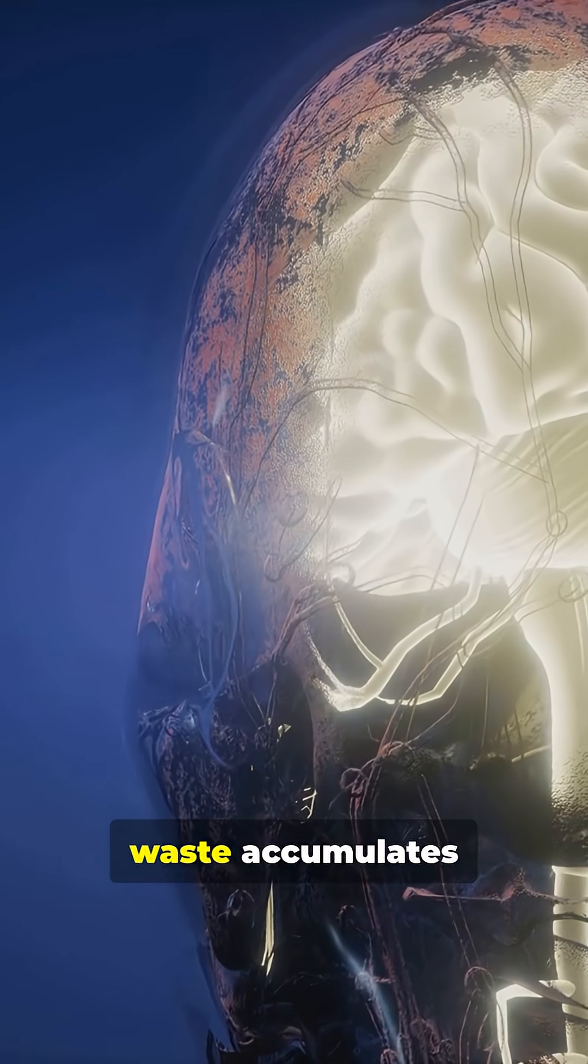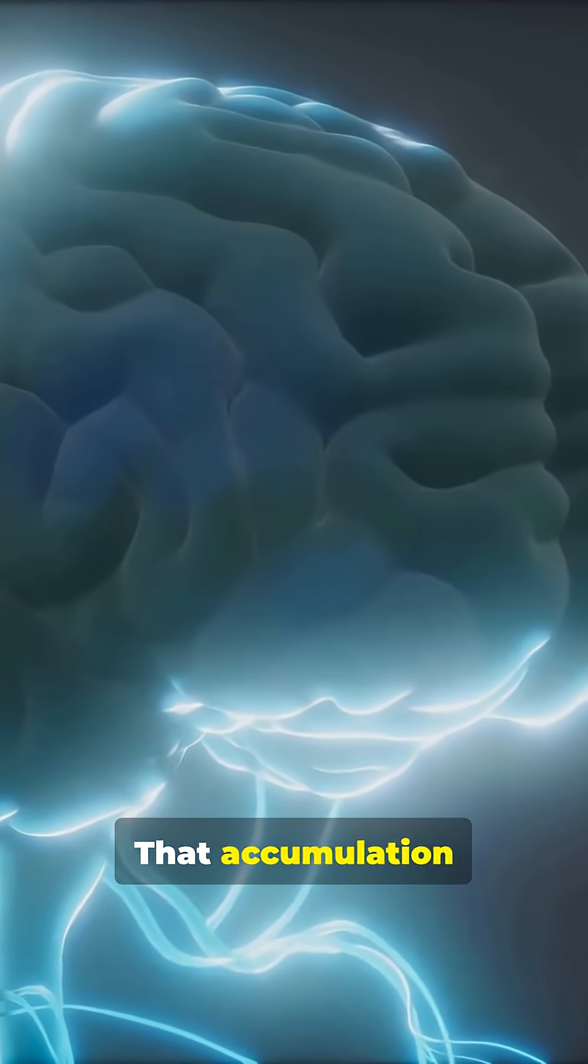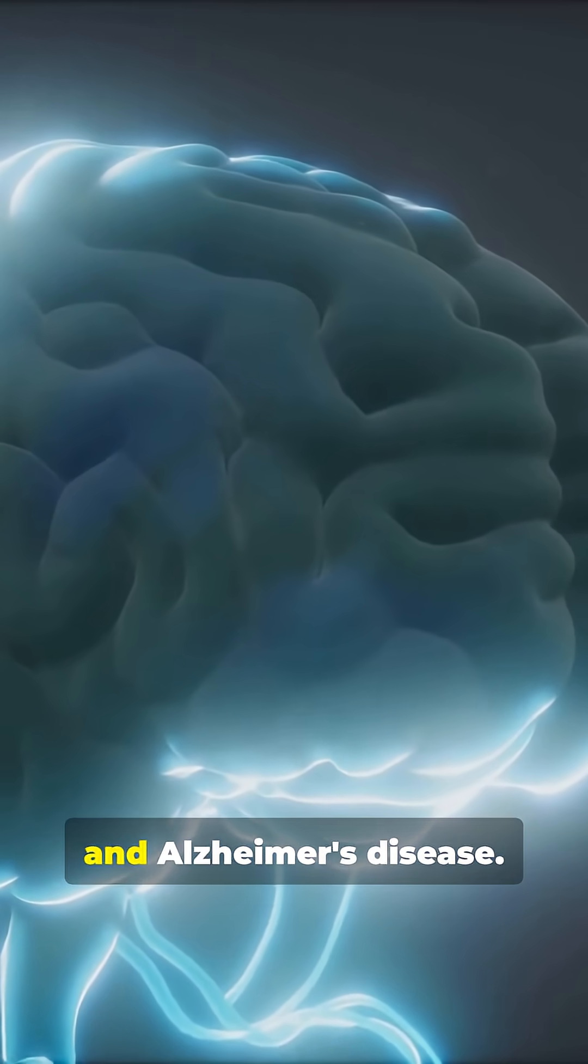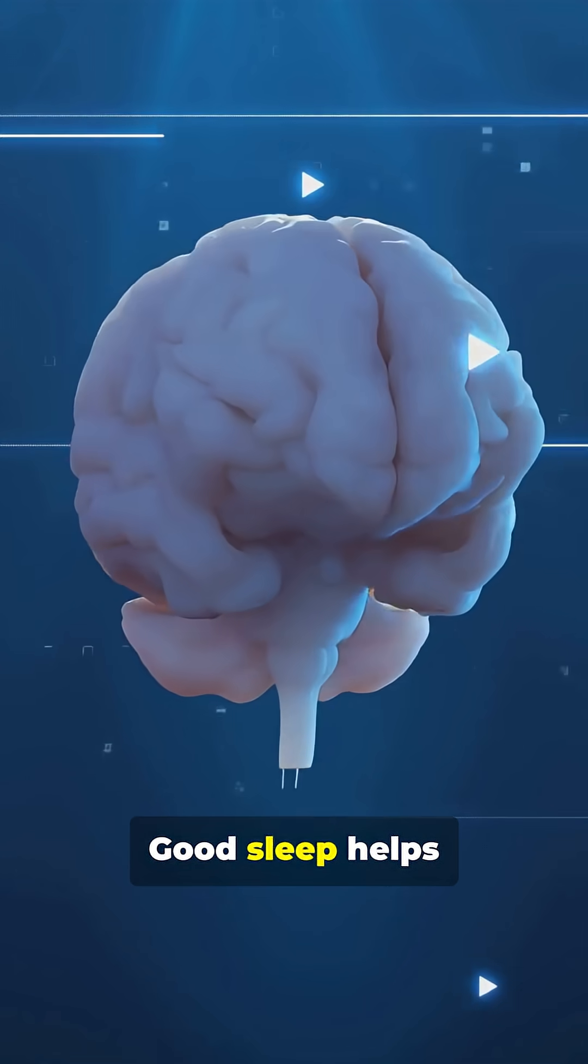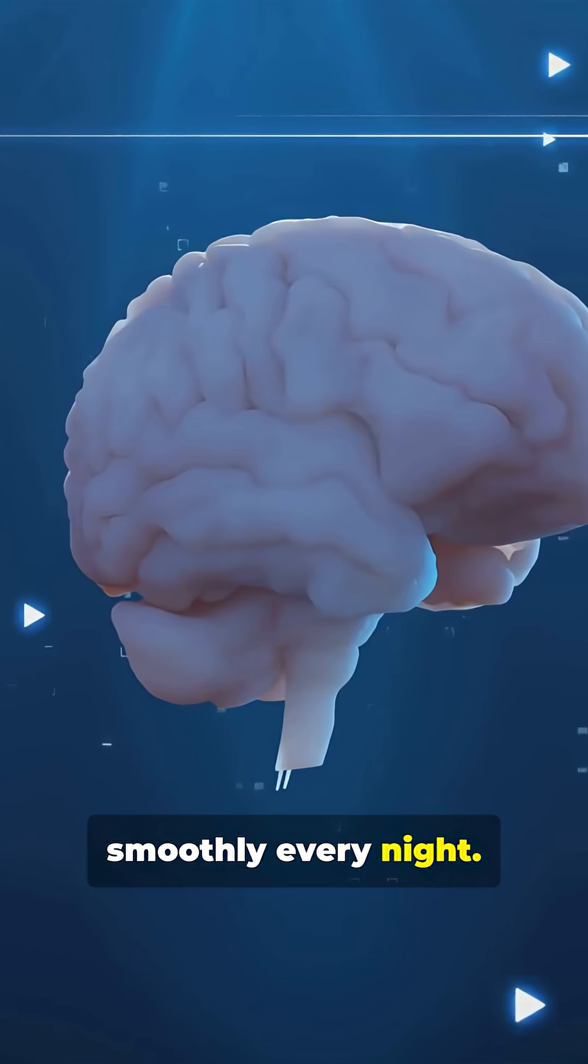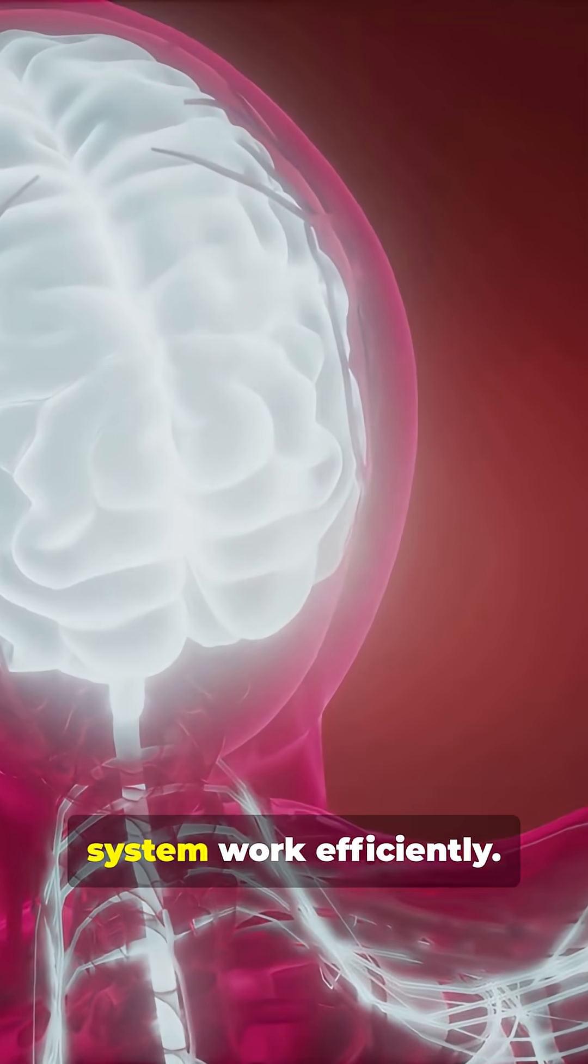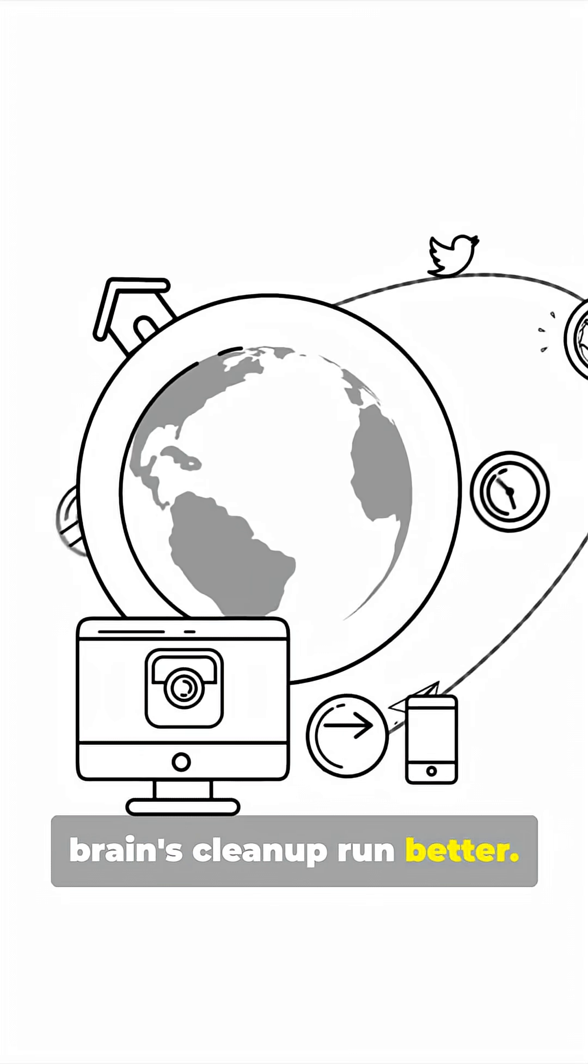If this cleanup slows, waste accumulates in the brain. That accumulation is linked to aging and Alzheimer's disease. Good sleep helps the system run smoothly every night. Healthy blood flow helps the cleanup system work efficiently. Even regular exercise helps the brain's cleanup run better.